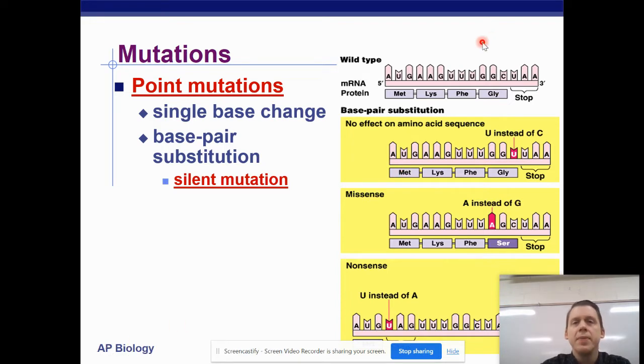So what we're going to do is let's take a look in the upper right. Here is some mRNA and this mRNA is as it should look. So there's the code AUG, AAG, UUU, GGC. And then here are the amino acids, methionine, lysine, phenylalanine, glycine, and then it stops. So this is what the protein should look like.